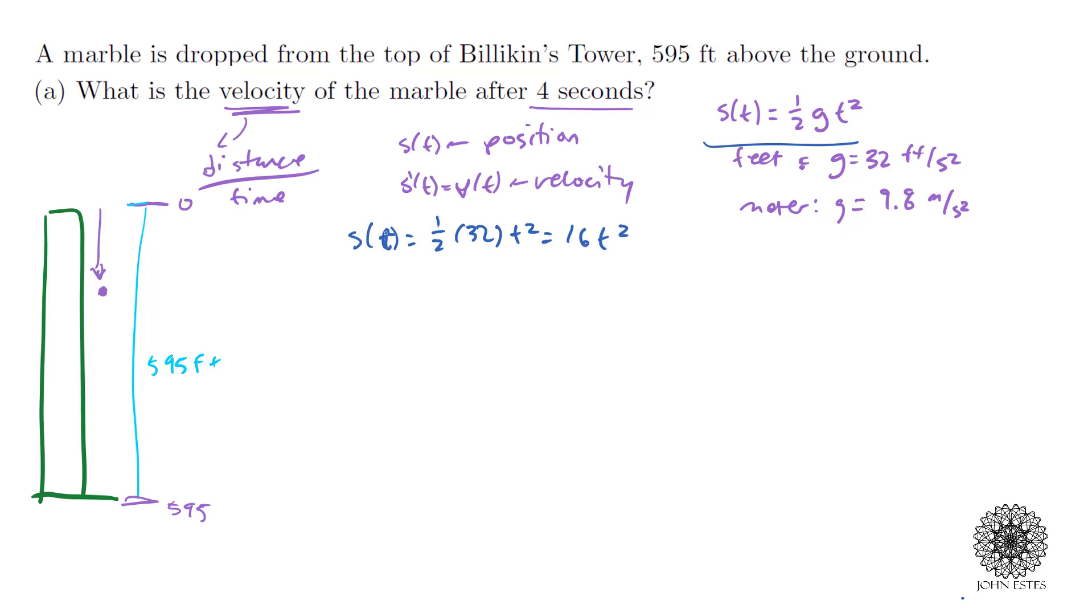We're ignoring air resistance. The derivative is the limit as h approaches 0 of s(t+h) minus s(t) all over h. That's 16(t+h)² minus 16t² all over h. I can easily foil this out. Taking the limit as h approaches 0, we get 16 times (t² + 2th + h²) minus 16t² all over h.